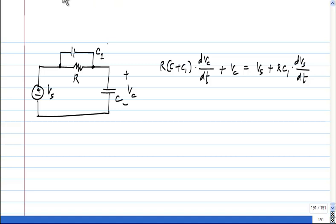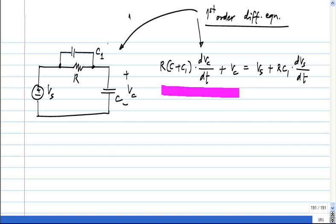The highest derivative of the variable you see here is 1, so this is a first order differential equation and consequently this circuit is also a first order circuit. The order of the circuit is nothing but the order of the differential equation that governs the circuit.